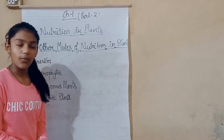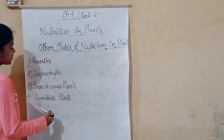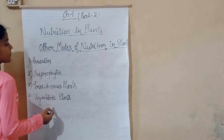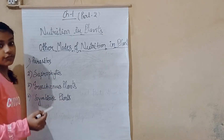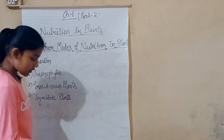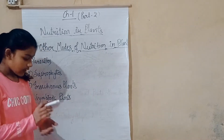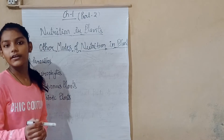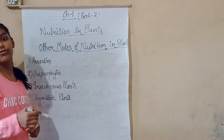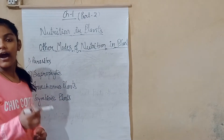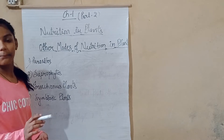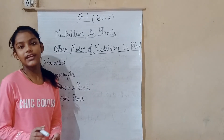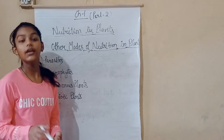There are four modes: parasites, saprophytes, insectivorous, and symbiotic. First, we will clarify what a parasite is. A plant which lives on or inside another organism and derives its food from it is called a parasite. Example: Cuscuta. Parasites are those plants that live on a particular plant or in its body.